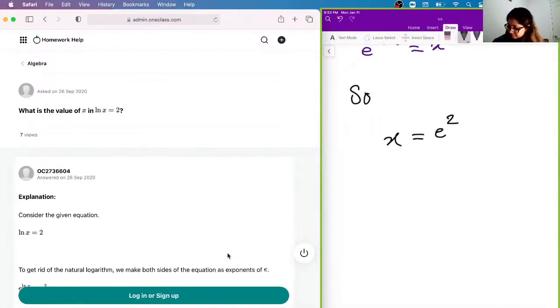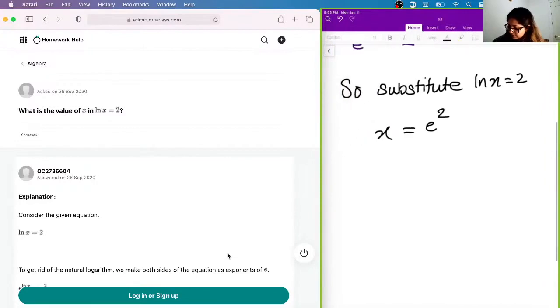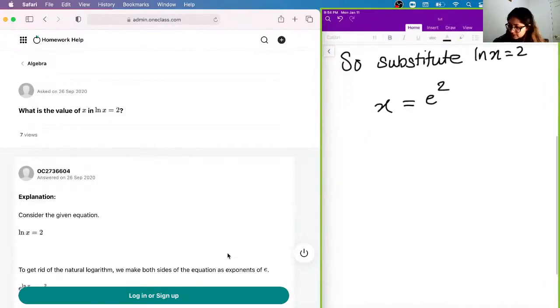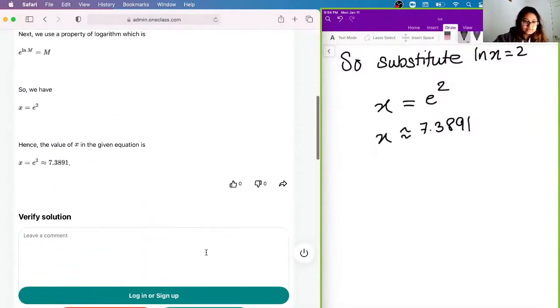So, we have x is equal to e to the power of 2, and if we further simplify this, x is equal to 7.3891, which is basically e squared. And so, the solution is e squared.